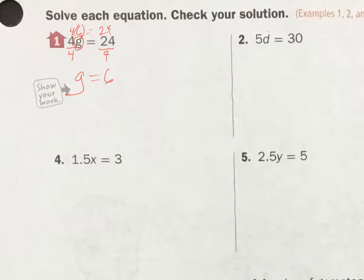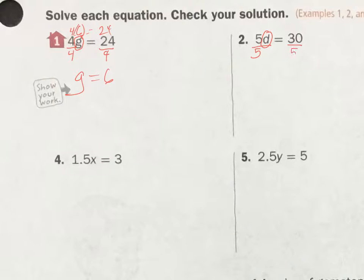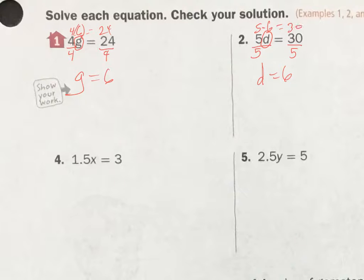Number 2. I get my variable all by itself. It's 5 times d, so now I need to do 5 divided by 5, and do that on each side. That leaves me with d equals 6. I put that in to check: 5 times 6 equals 30. Good to go.